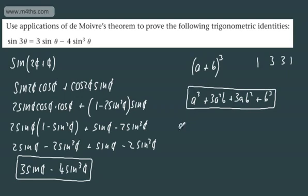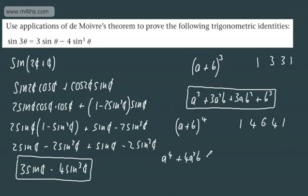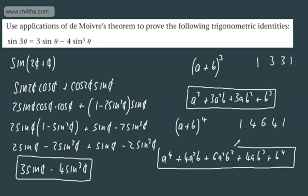For (a + b)⁴, the coefficients from Pascal's triangle are 1, 4, 6, 4, 1, giving a⁴ + 4a³b + 6a²b² + 4ab³ + b⁴. We're going to use exactly this idea to work with sin(3θ) and express it as 3sin(θ) − 4sin³(θ).